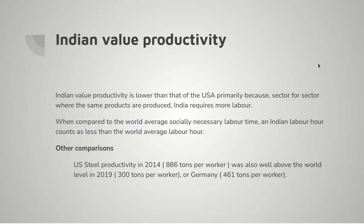Take other countries for example. US steel productivity is particularly high at 886 tonnes per worker. The world average in 2019 was 300 tonnes per worker — that's the world's socially necessary labour time. The necessary labour time is 1/300th of a working year per tonne. The Indian requirement was 1/150th of a working year per tonne, roughly. So Indian labour in the steel sector counts as half of socially necessary labour. US labour in the steel sector counts as roughly three times socially necessary labour, because it's three times as productive — one hour of a US steel worker's labour adds the equivalent of three hours of average world steel worker labour.